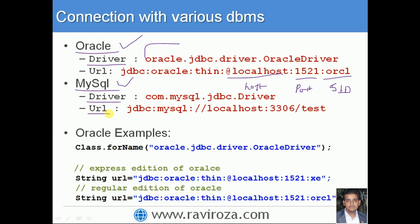For the MySQL JDBC URL, the protocol is jdbc, the sub-protocol is mysql, followed by localhost as the host name, then the port number, and then you specify your database name. You also provide the MySQL username and password.